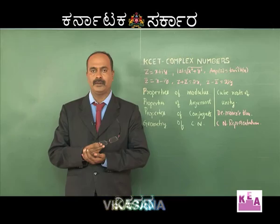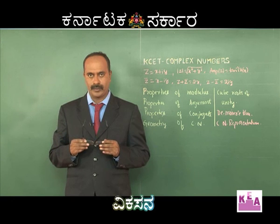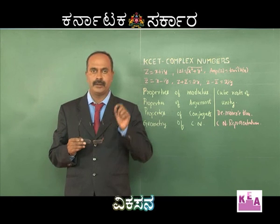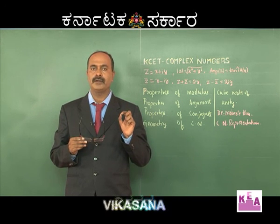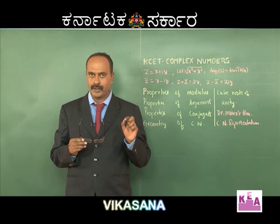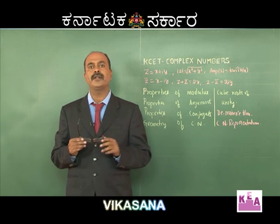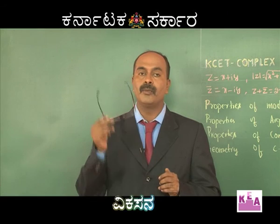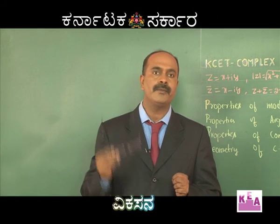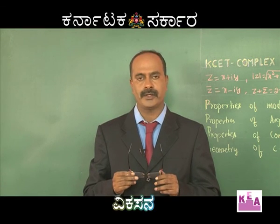Talking about the properties of modulus: modulus of z is √(x² + y²). Modulus of z₁·z₂ is |z₁|·|z₂|. Modulus of z₁/z₂ is |z₁|/|z₂|, provided z₂ ≠ 0.